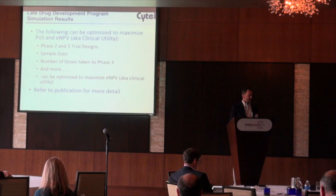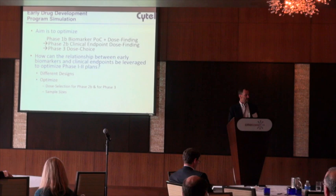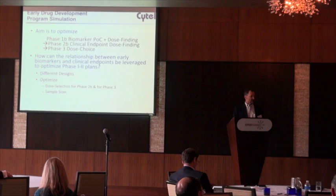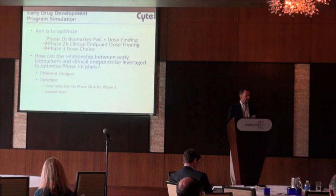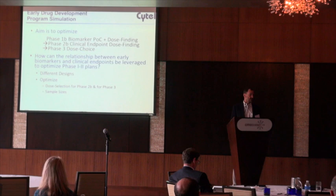We found that those factors could be optimized. The early development program aimed to optimize that sequence of trials, and in particular, how the relationship between the biomarkers and the clinical endpoint could be leveraged to optimize the early development plan. The optimization criteria were picking the right dose at the end of phase two B and picking the right sample sizes.